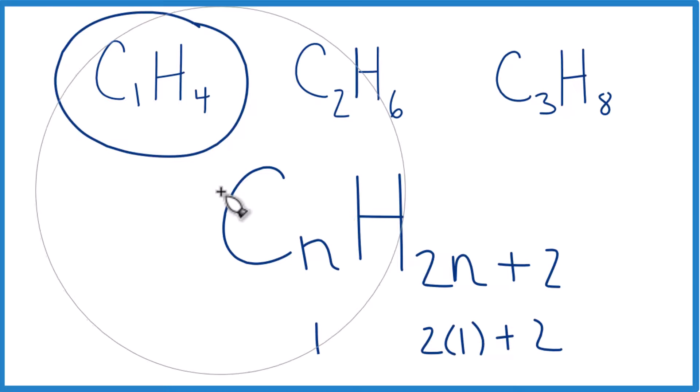If you had two carbons, n would be two, and you'd have two times two plus two. So two times two is four plus two is six. C2H6, there's our ethane.